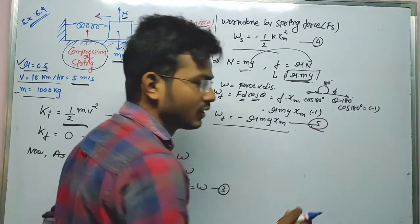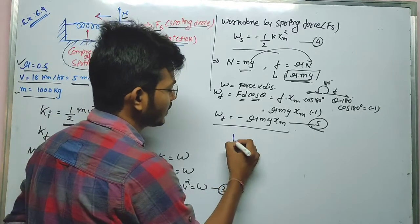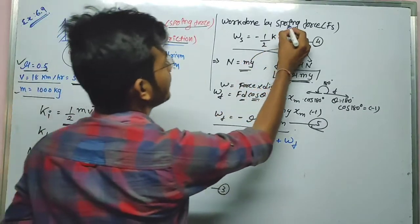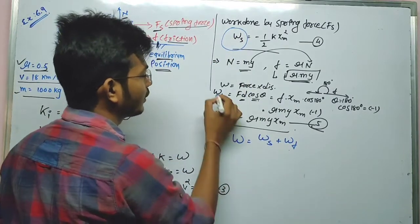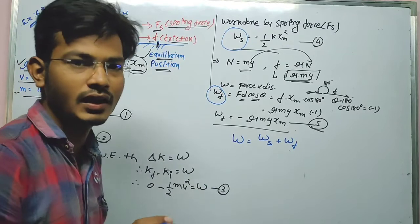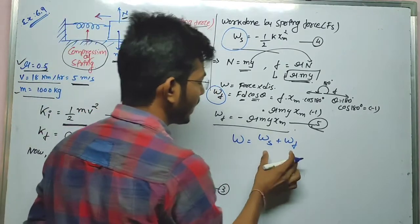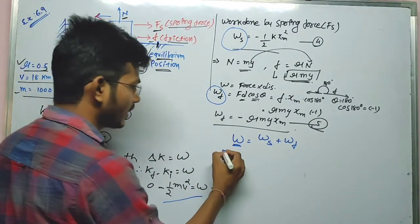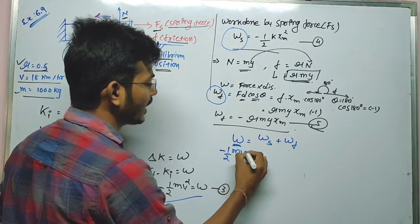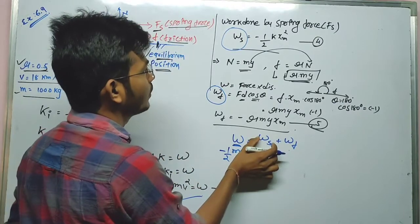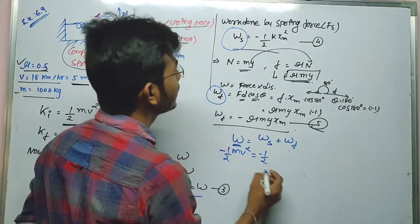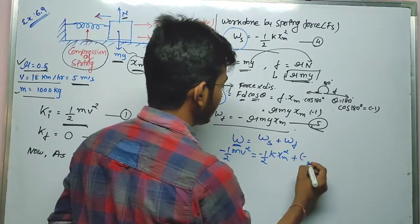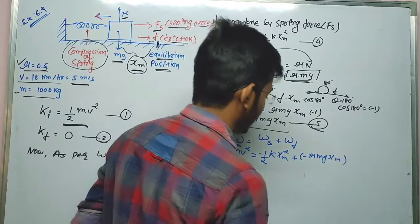The net work W equals W_spring plus W_friction. Substituting all values: minus (1/2)mv² equals W_spring plus W_f, that is, minus (1/2)k·xm² plus (minus mu·mg·xm). So minus (1/2)mv² equals minus (1/2)k·xm² minus mu·mg·xm.